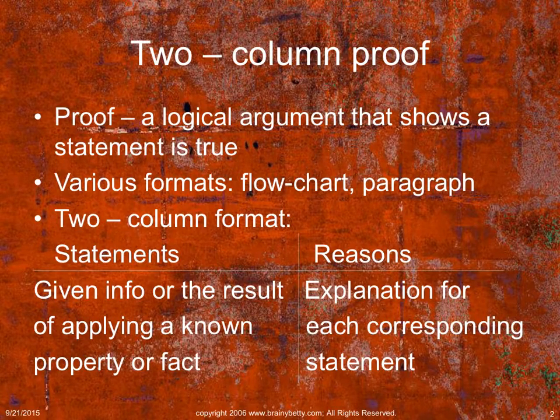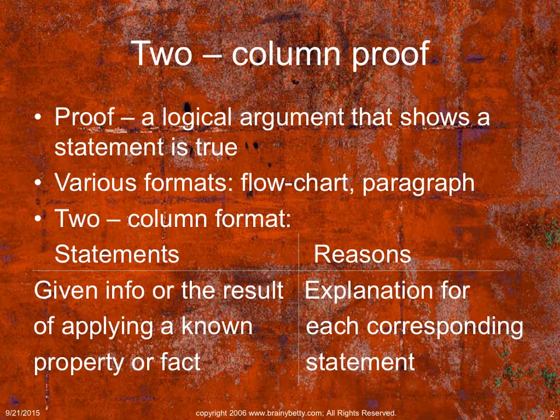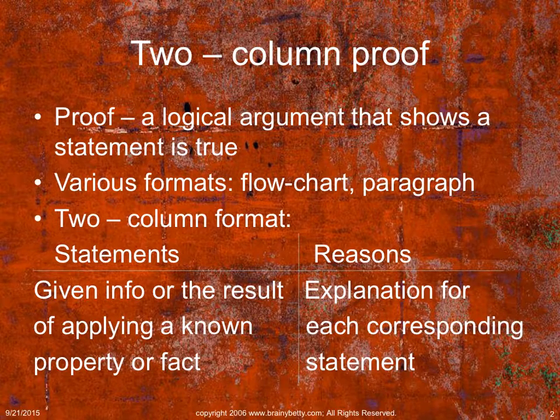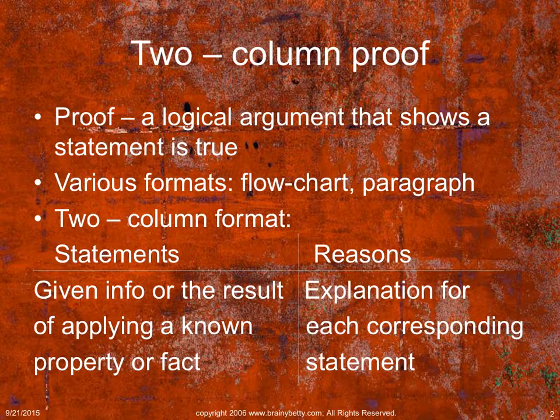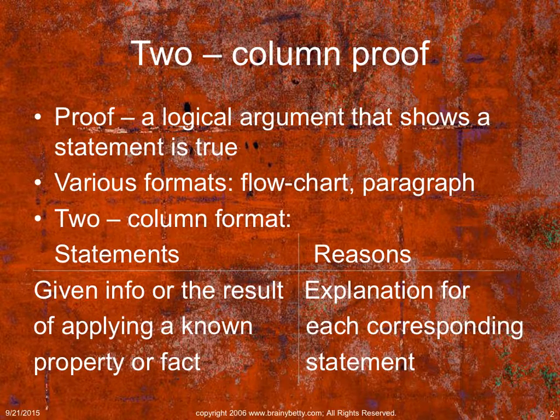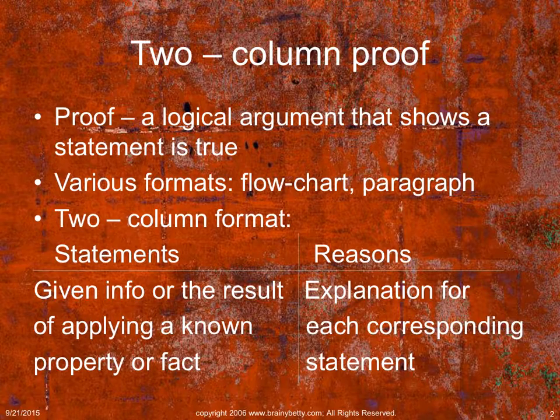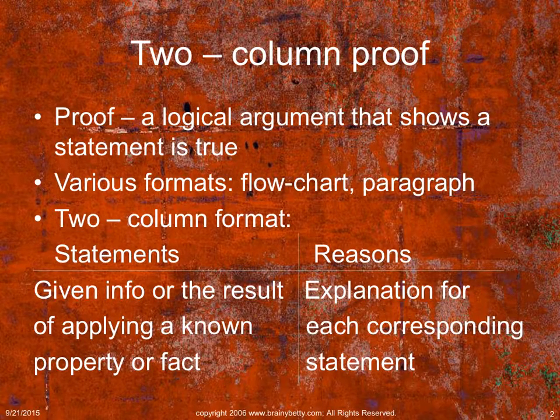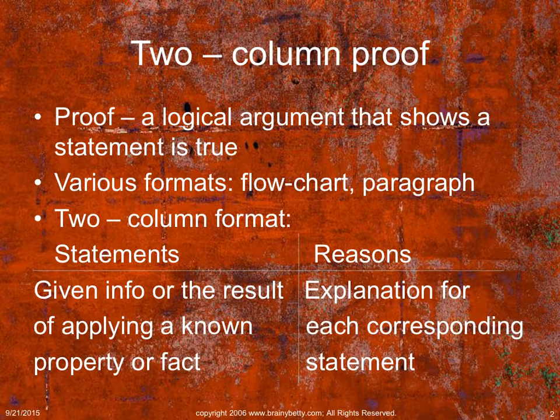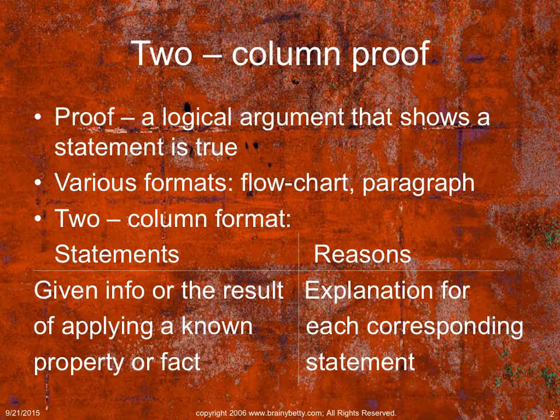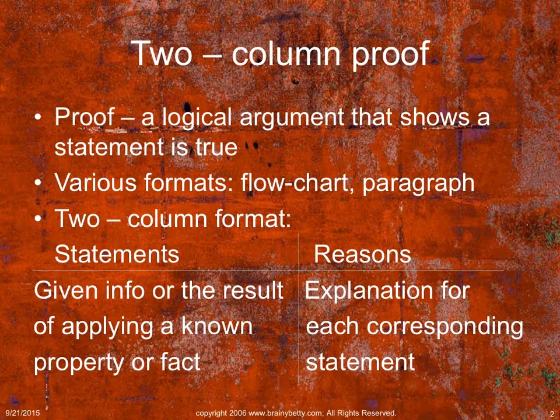So what we're going to do is these are called two-column proofs. And a two-column proof, you did them with an algebraic function already. You wrote steps and then next to those steps, you wrote reasons. By definition, a proof is a logical argument that shows the statement is true. There's various kinds: flowchart, paragraph, and two-column proof format, which is what we will most likely use. On the left-hand side, you're going to put your statement, and on the right-hand side, you're going to put your reasons.